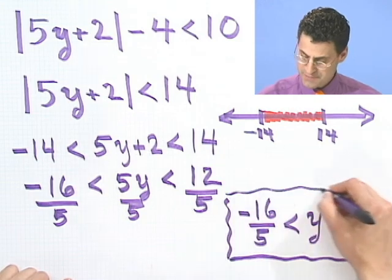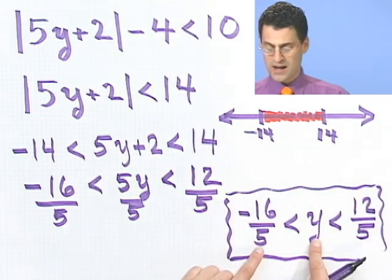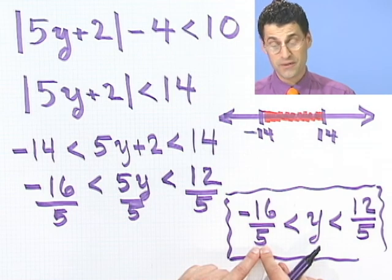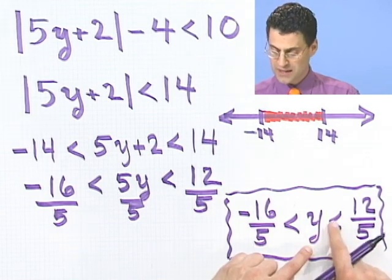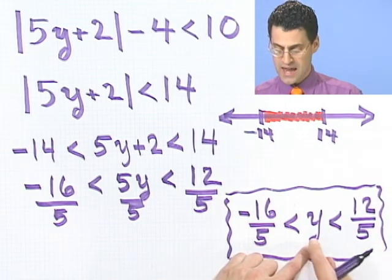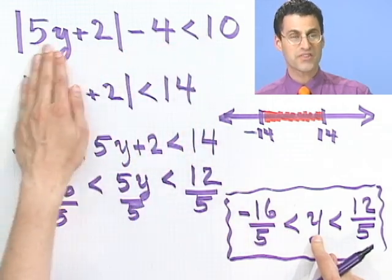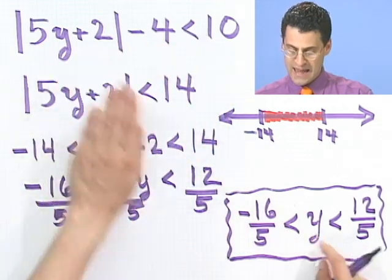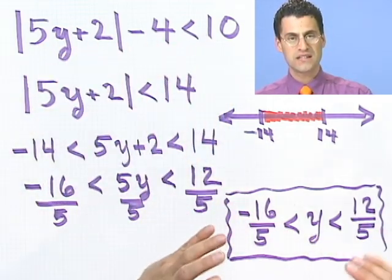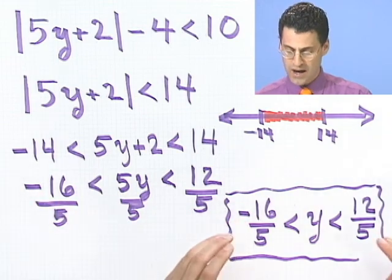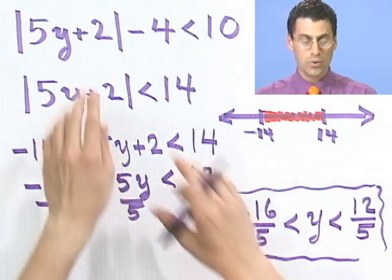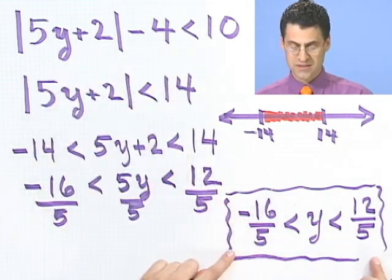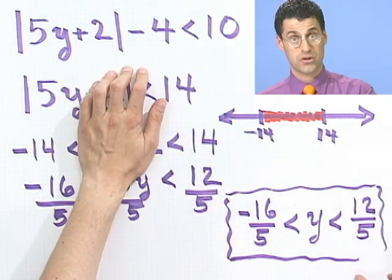What does that mean? It means that any single y that's bigger than minus 16 over 5, yet, at the same time, less than 12 over 5, any such y will satisfy this original inequality. And any y outside of that little teeny region, any y outside of that, I know will not satisfy this. So in fact, this is the solution to this absolute value inequality.